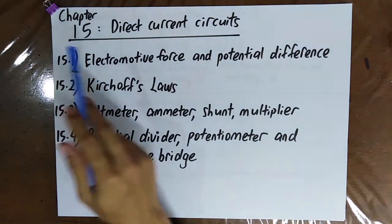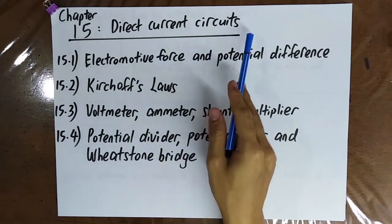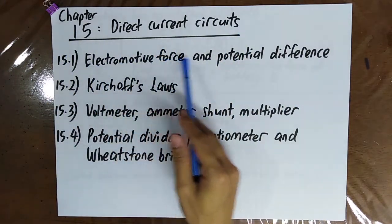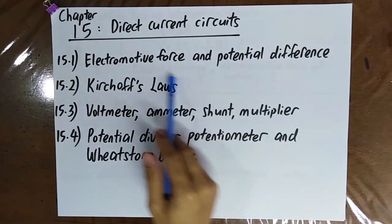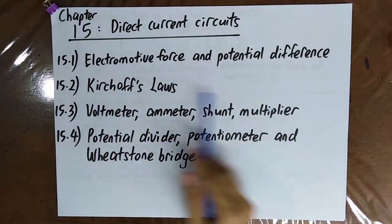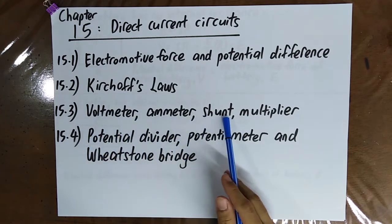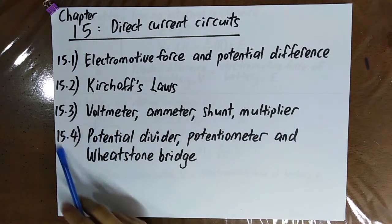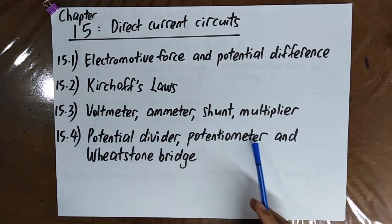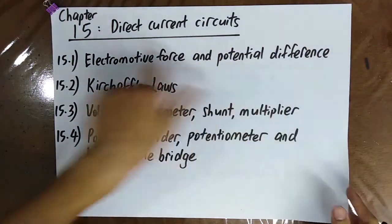Welcome to chapter 15. In this chapter, we will be talking about direct current circuits. In the first video, we will talk about electromotive force and potential difference. In the second video, we will talk about Kirchhoff's laws. In the third video, we will talk about voltmeter, ammeter, shunt, and multiplier. And in the fourth video, we will be talking about potential divider, potentiometer, and also Wheatstone bridge. So let's start our first video.